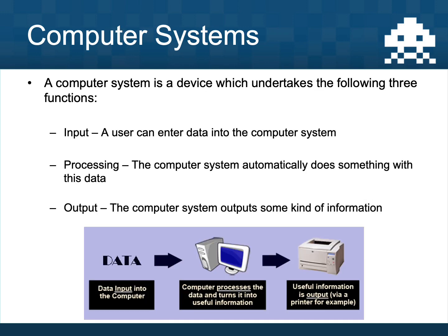A computer system is any device that does the following three things: it can input data from a user — it can take in some form of data from a human being. It then does some kind of processing or automated task with that data, and it outputs information. For example, I'm sat now talking into my microphone — that is data input, data going into my laptop.